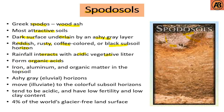These organic acids dissolve iron, aluminium, and organic matter from the topsoil. Spodosols have illuvial horizons and colorful subsoil horizons. They tend to be acidic with low fertility and low clay content. They occupy about 4% of the glacier-free land surface.